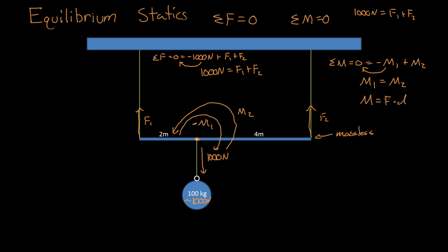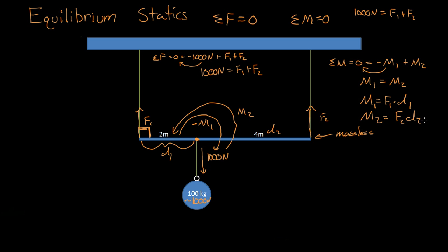Remembering that moment equals force times distance, moment one is force one times distance one — and the distance must be perpendicular to the force. So distance one is the perpendicular distance. Similarly, moment two equals force two times distance two. Setting them equal: force one times distance one equals force two times distance two.